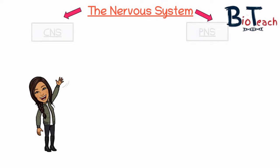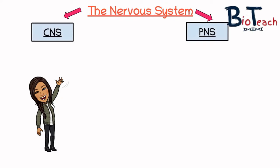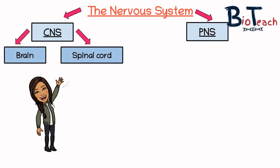The nervous system is split into two different pathways: the central nervous system and the peripheral nervous system. The central nervous system is made up of the brain and the spinal cord. The brain is responsible for receiving and processing sensory information — it initiates responses, stores memories, and generates thoughts and emotions. The spinal cord conducts signals to and from the brain and controls reflex activities.